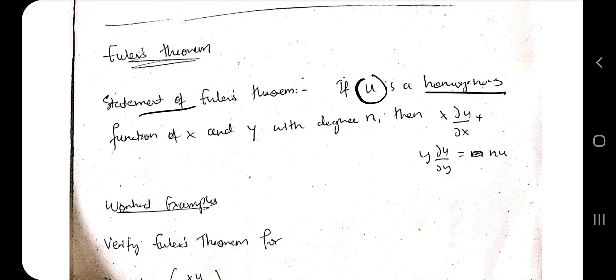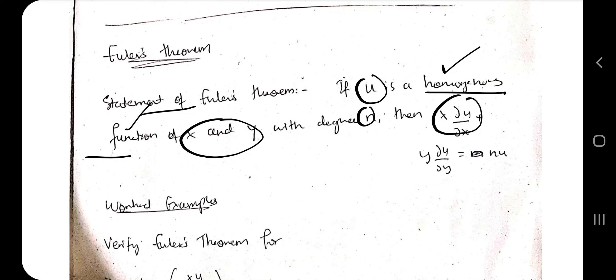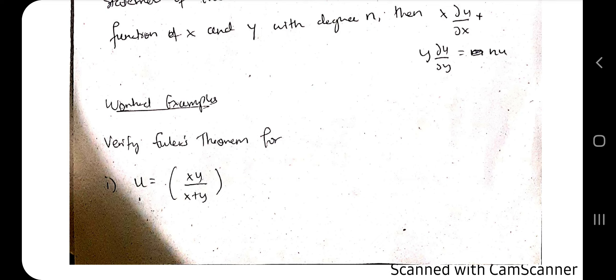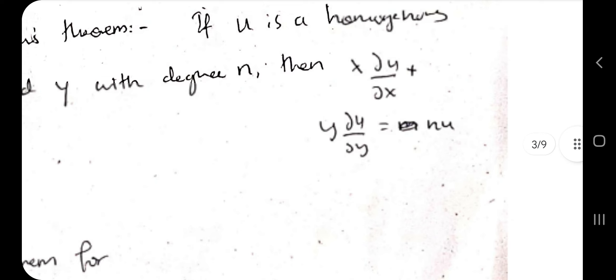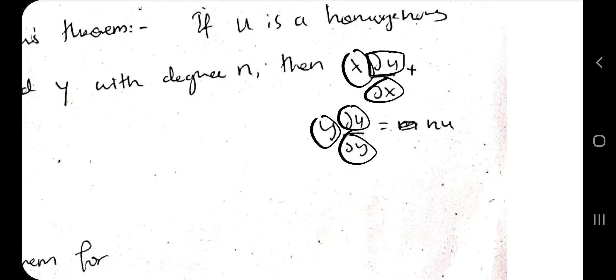Next is Euler's theorem. The statement is: if u is a homogeneous function of x and y, first we need to prove that u is a homogeneous function. If it is homogeneous of degree n, then x·(∂u/∂x) + y·(∂u/∂y) = n·u. So if degree is 1 the answer is 1u, if degree is 2 it is 2u, and so on. For the first example, u = xy/(x + y).